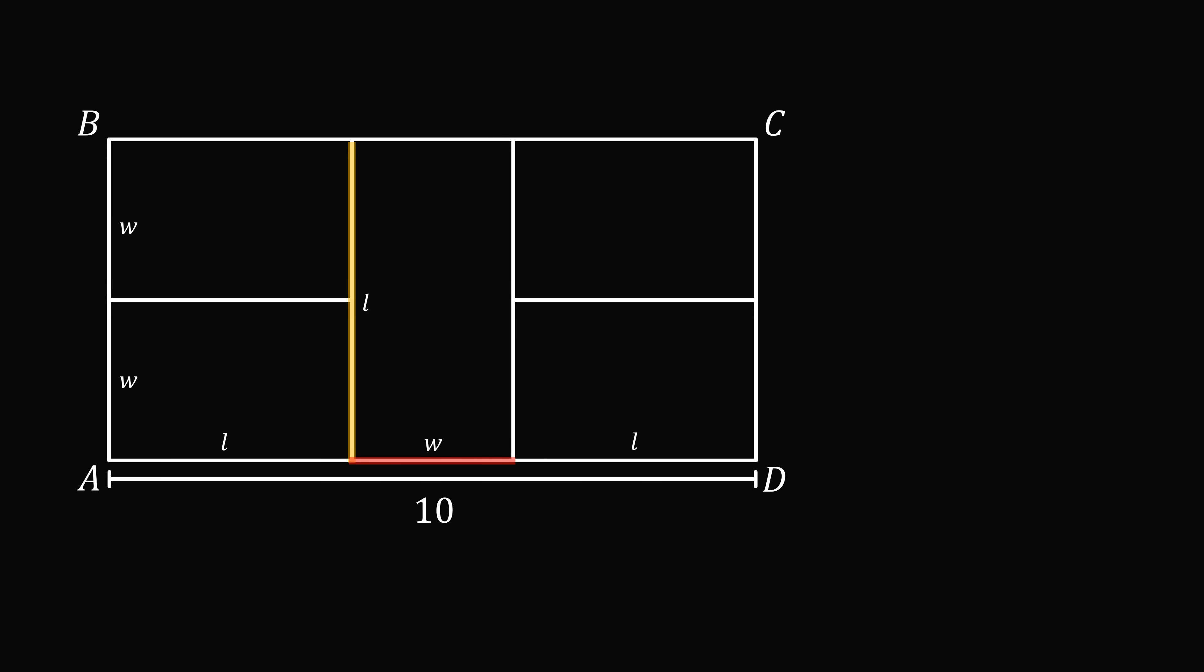Now, focus on the side AB. One length is equal to L, but the other length is also equal to 2W, so we have 2W is equal to L.